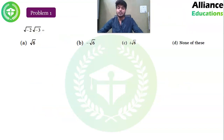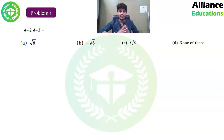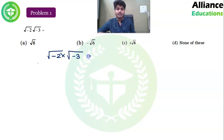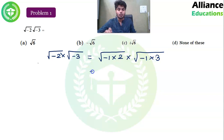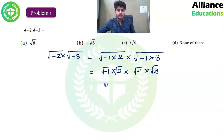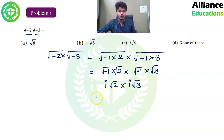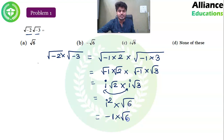Numerical: √(−2) × √(−3) की value क्या होगी? √(−2) = √(−1 × 2) = i√2 और √(−3) = √(−1 × 3) = i√3। So i√2 × i√3 = i² × √6 = (−1) × √6 = −√6। Answer is −√6, so option B is correct।